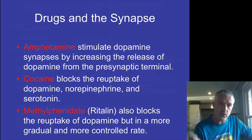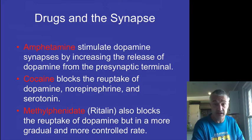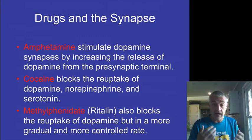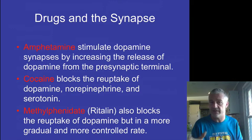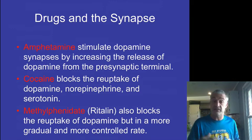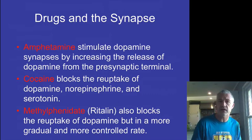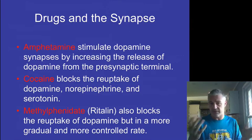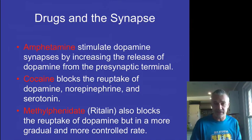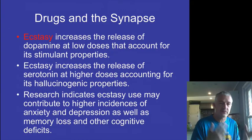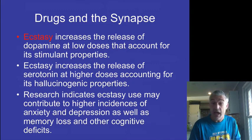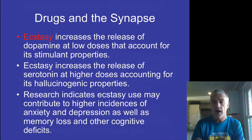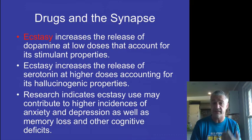Drugs can definitely act as neuromodulators, increasing or decreasing the amount of a particular neurotransmitter. Amphetamines actually stimulate increased release of dopamine, part of the reason for their stimulatory effect. Cocaine, on the other hand, blocks the reuptake of things like dopamine and norepinephrine — which is why it can lead to increased heart rates, because it just stays in the synapse. Ritalin acts kind of like cocaine but in a much more controlled fashion. Ecstasy at low doses acts as a stimulant, but at really high levels you get a lot more serotonin and can get hallucinogenic properties, and can also lead to issues with depression when stopped.